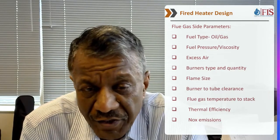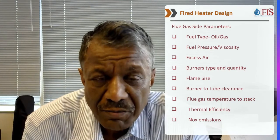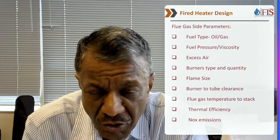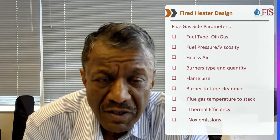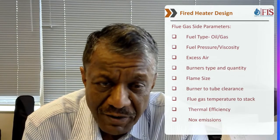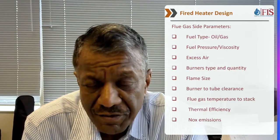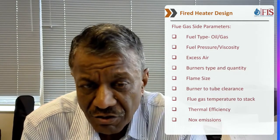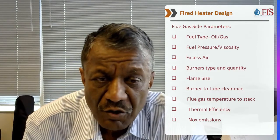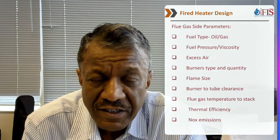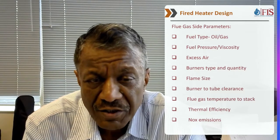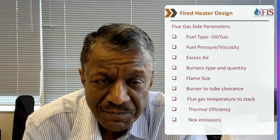Most heater vendors try to cut down on the number of burners. But as an owner, you want to ensure you have small flames and uniform heating — which means more burners, and therefore more cost. Flame size is very important: you want flames never touching the tubes, the arch, or the convection section. You also need to ensure good burner-to-tube clearance; higher clearance means better heater operation but also more cost. API 560 has some minimum burner-to-tube clearances to follow.